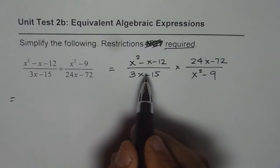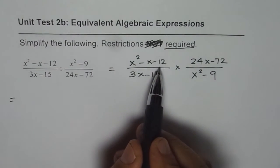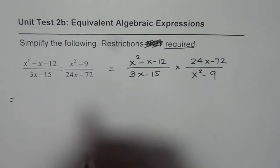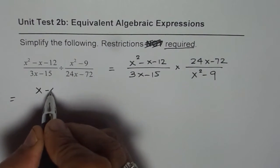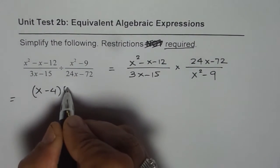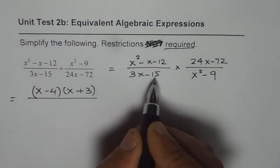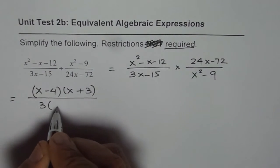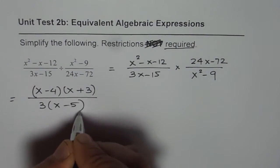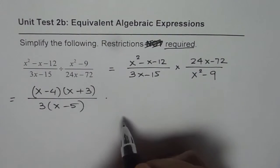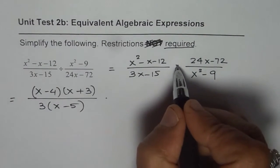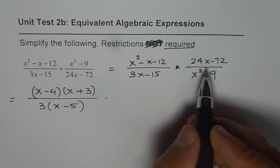Now, let us factor. So, we are looking for two numbers whose product is minus 12, sum is minus 1. So, it is x minus 4 times x plus 3. Denominator, we can take 3 common, we are left with x minus 5 times, better to write dot instead of x since you can get confused. So, let me make a dot here.